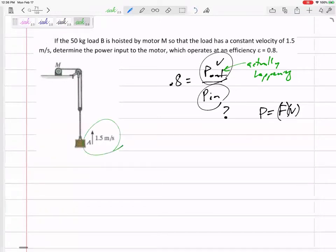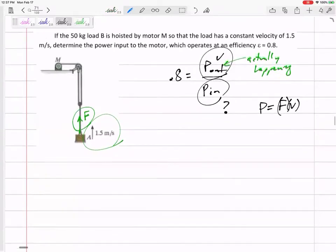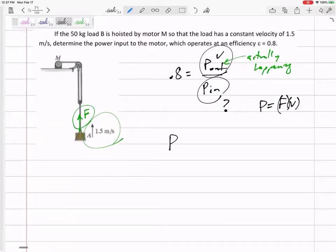What's actually happening is this block is going with a velocity of 1.5, and there's a force F right here. The tension is pulling at 1.5 meters per second. So power out, the power that's actually happening is the force that's actually happening times the velocity. What is happening right here? 1.5 meters per second. What is the force in this cable?